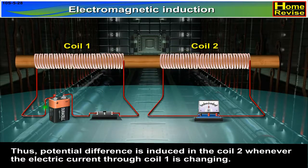Thus, potential difference is induced in coil 2 whenever the electric current through coil 1 is changing.